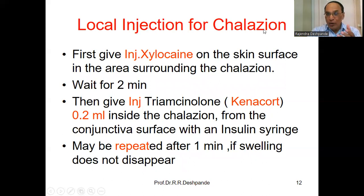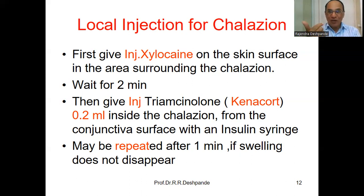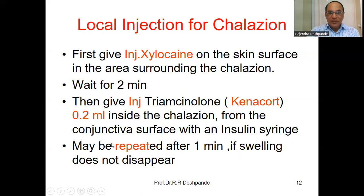For the local injection of Chalazion: first give injection Xylocaine (anesthesia) on the skin surface surrounding the Chalazion, then wait two minutes for the anesthetic effect. Then give injection Triamcinolone (Kenalog) — only 0.2 ml — inside the Chalazion from the conjunctival surface using an insulin syringe. This is an important point for students: if asked about the uses of an insulin syringe, mentioning its use for intralesional Chalazion injection will earn you extra marks. This injection may be repeated after one month if the swelling does not disappear.